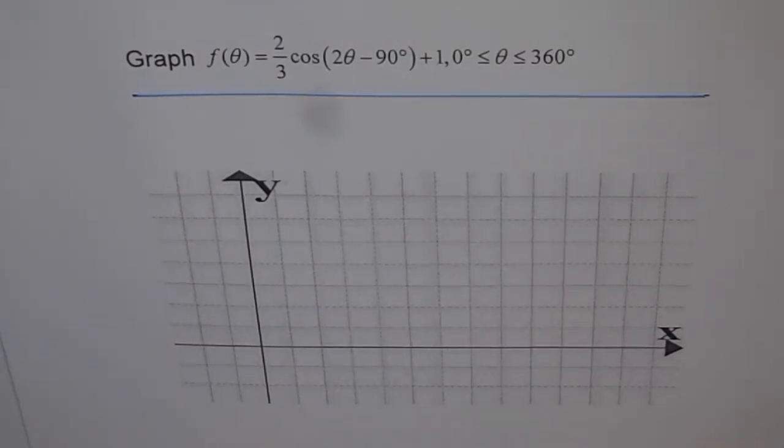Graph the function f of theta equals 2 over 3 cos of 2 theta minus 90 degrees plus 1, where theta is between 0 and 360 degrees. With this example, I'd like to explain you a couple of things.